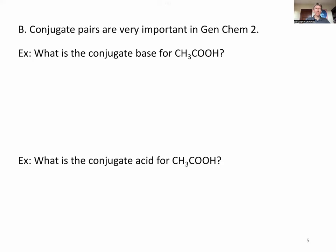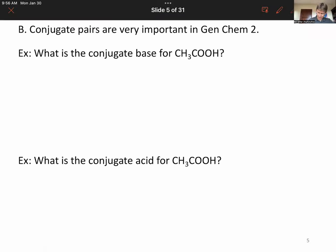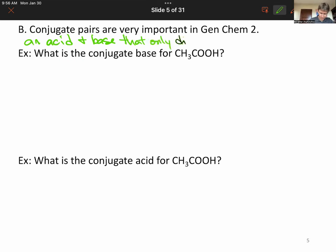What is a conjugate pair? A conjugate pair is an acid-base combination that only differs by 1 H+. A proton is an H+.